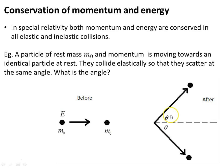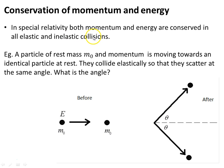Let's look at conservation of momentum and energy. In special relativity, both momentum and energy are conserved in all elastic and inelastic collisions. In Galilean or Newtonian mechanics, inelastic collisions don't involve conservation of energy — only elastic ones do — whereas in special relativity, all collisions conserve both.